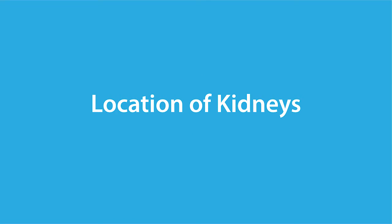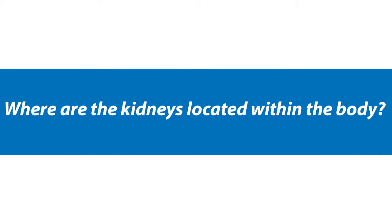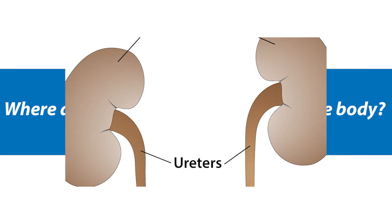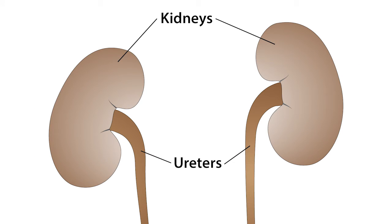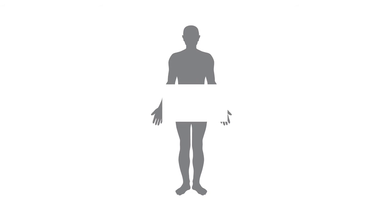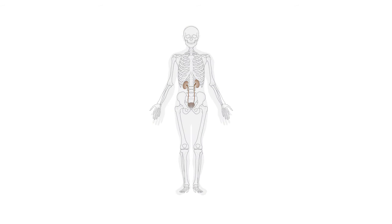In this lesson we're going to examine basic renal anatomy. So let's start with the question: where are the kidneys located in the body? The human kidneys are bean-shaped structures that reside in the mid-abdominal area, just lateral of the vertebra.